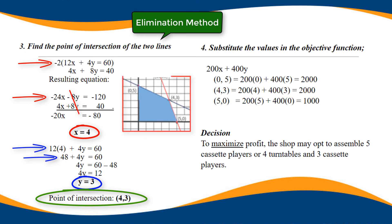So we have three vertices of the feasible region: 0, 5, 4, 3, and 5, 0.